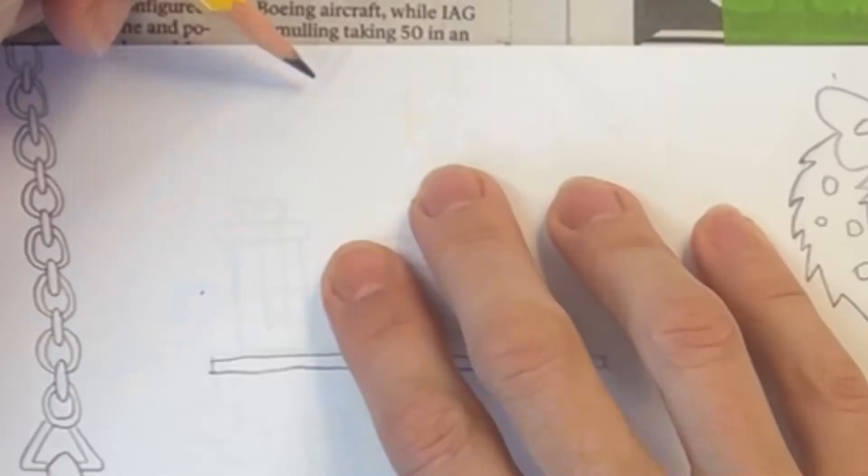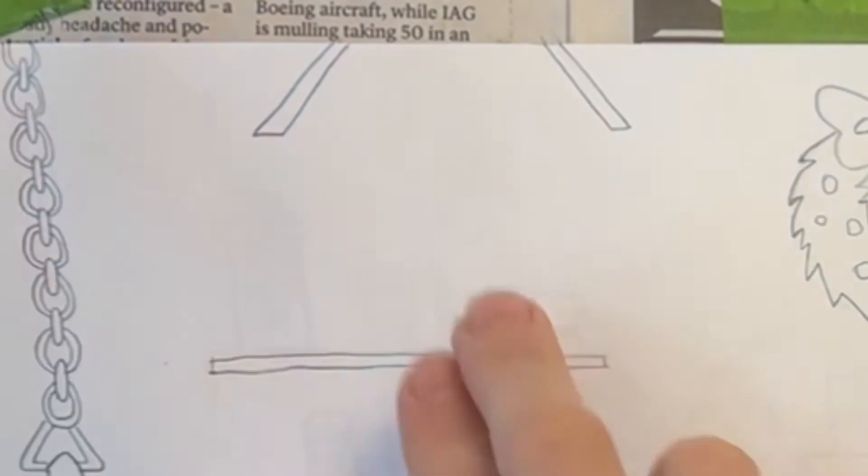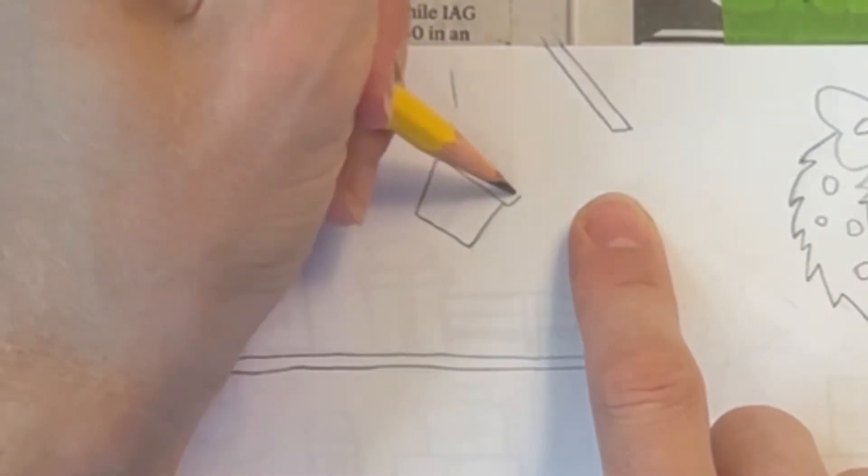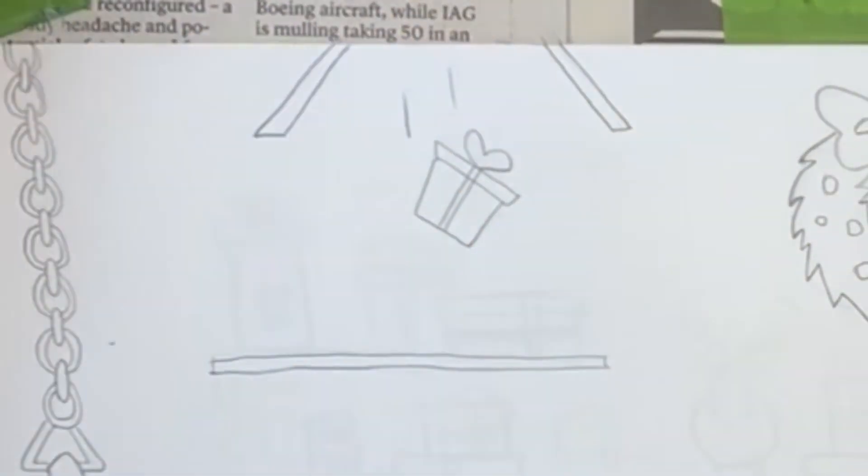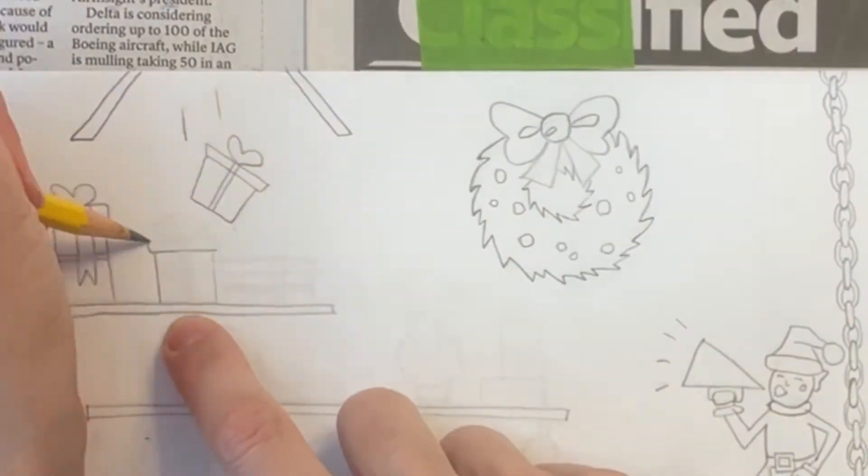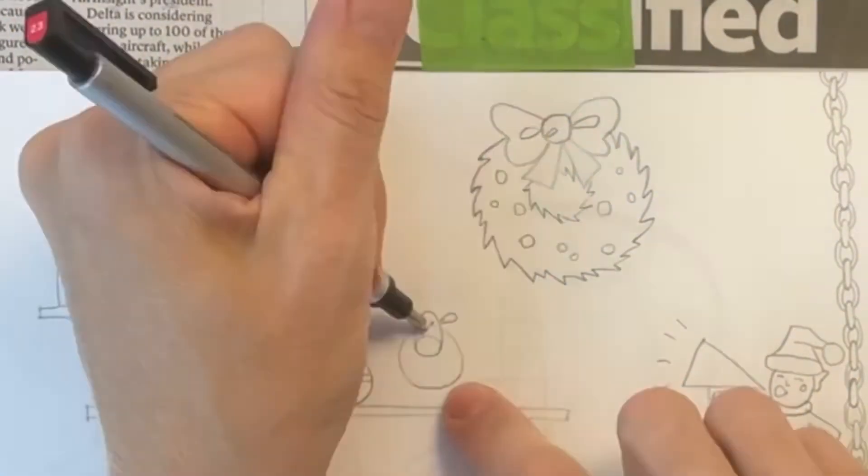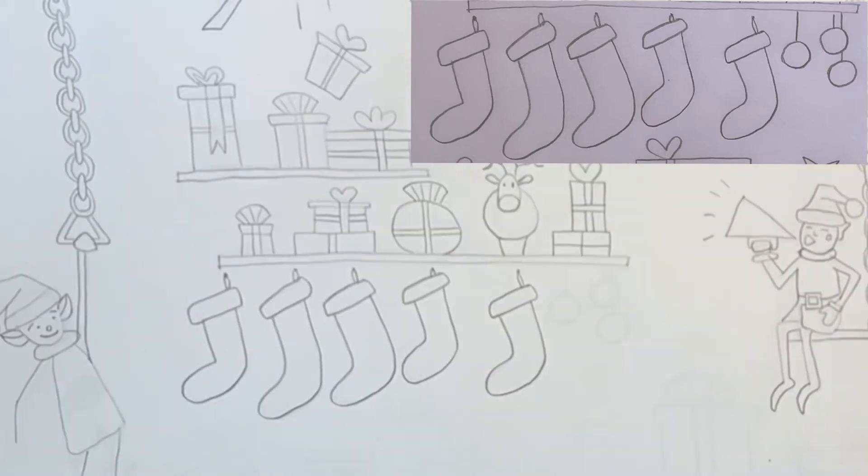Now I'm drawing the trap door on the ceiling and as you can see there's a present falling out of it. I'm adding a bunch of presents on top of the floating shelves. I'm drawing some hanging stockings under the shelf. But my head's in the way. There now you can see.